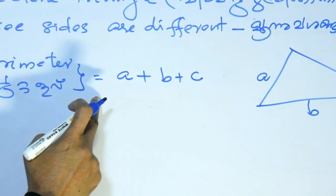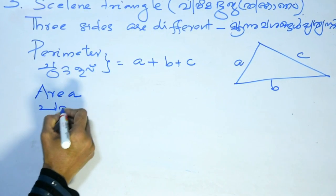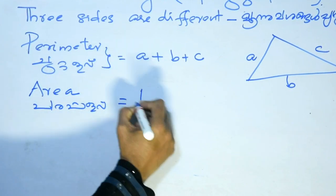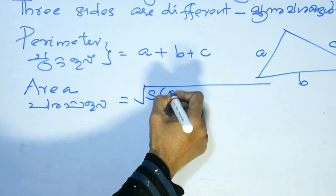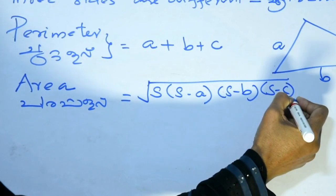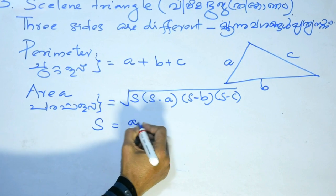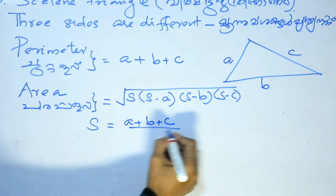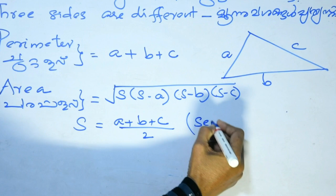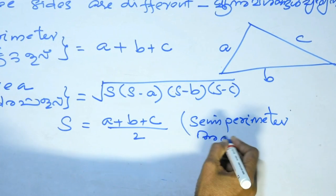Perimeter equals A plus B plus C. For the area of the Scalene Triangle, we use Heron's formula. The semi-perimeter S equals A plus B plus C divided by 2. If the perimeter is 10, then the semi-perimeter is 5.